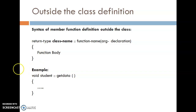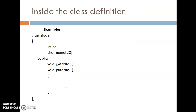For example, if we have created one class student, then to create the get data function outside the class: write void, then student, scope resolution operator, get data function, opening and closing bracket, and write down the coding inside that bracket. For defining inside the class definition, here is a class student with opening and closing brackets. Whatever functions we define inside those brackets are called member functions defined inside the class. The put data function here is defined inside the class student.